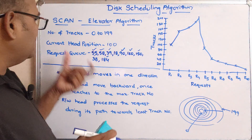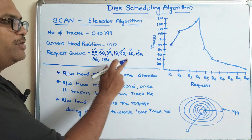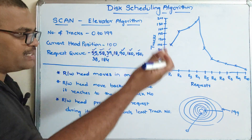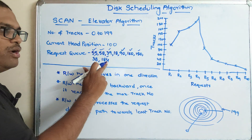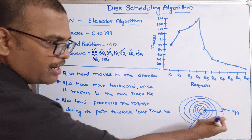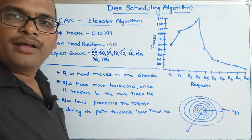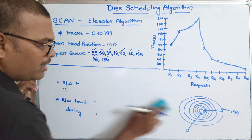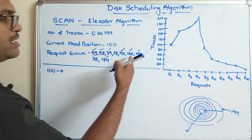The SCAN algorithm only starts in a forward direction. In this case the current head position is at 100, so the next possible request to be processed is 150. If the current head position were at 50, the requests processed would be: 55, 58, 90, 150, 160, 184 — then it reaches 199 and comes back to 0. Once it hits the largest number it comes back to zero, and during the return it processes the remaining requests.